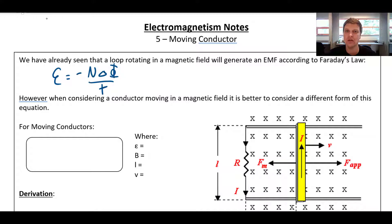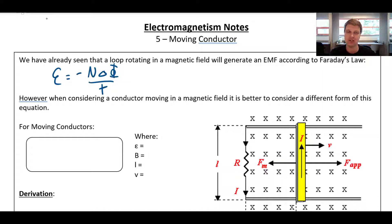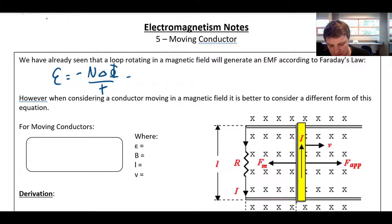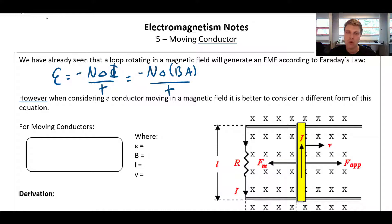The amount of voltage you generate is negative N delta phi over t. The negative sign is there to remind us that the direction of current flow is such that the induced magnetic field opposes the change in the external field. A reminder that phi depends on the strength of the field and the area, so we can think of Faraday's law as negative N times delta B times A over t, where the flux is how many field lines pass through a loop of wire.